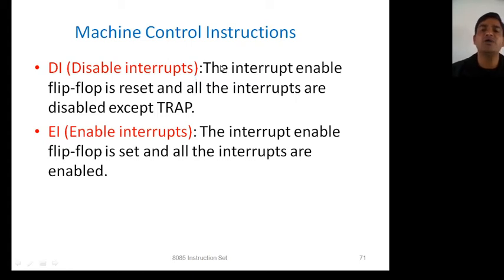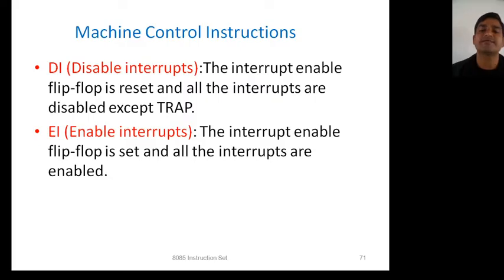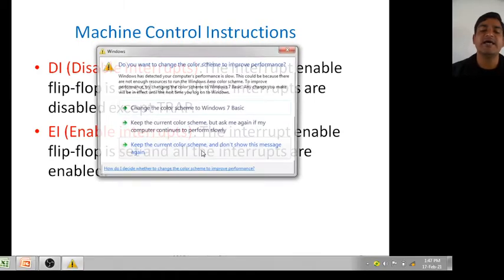Next is DI — Disable Interrupts. If you want to disable interrupts, the DI instruction is used. The interrupt enable flip-flop is reset or disabled. Except TRAP, you cannot disable TRAP because it is a non-maskable interrupt.